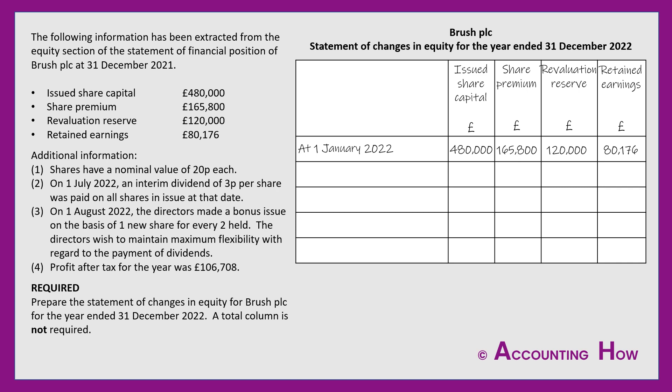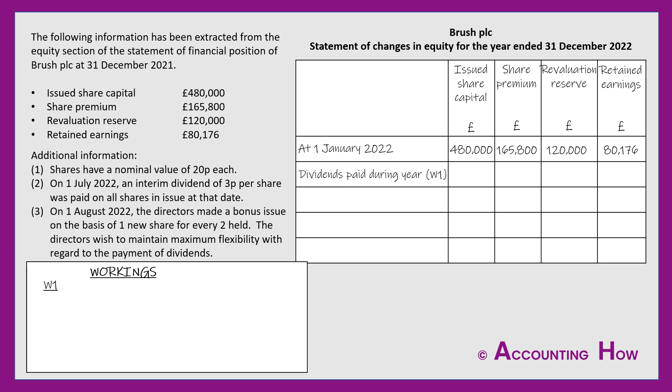Point one tells me shares have a nominal value of 20 pence each — we'll come back to that. On the 1st July 2022, an interim dividend of 3 pence per share was paid on all shares in issue at that date. Interim dividends are paid part way through the year so shareholders don't have to wait a full year before seeing a return on their investment. I put the narrative 'dividends paid during the year' with a W1 reference, because I need a working to find out how much this cost the company.